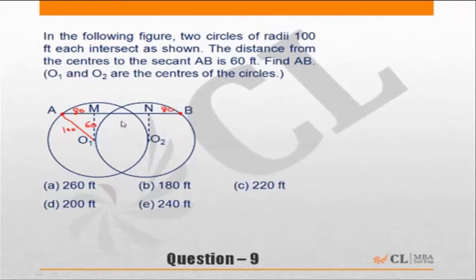Same here. MN will be equal to the radius because O1O2 is also a radius, so this will be 100. Therefore, AB equals 80 plus 100 plus 80, which gives us 260.